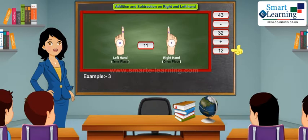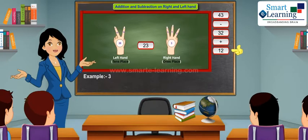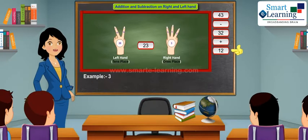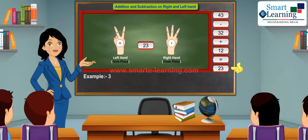In order to add 12, take 2 fingers on your right hand and 1 finger on your left hand. Read the number. Your answer is 23.